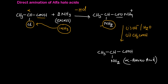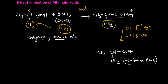We get this alpha amino acid from direct amination. We require excess ammonia because when taken in excess, the reaction proceeds in the forward direction toward the product side. Without excess ammonia, we do not get the desirable product. By this method we can prepare different amino acids — in this case it is alanine; we can also prepare glycine, serine, and many other amino acids by this direct amination of alpha halo acids.